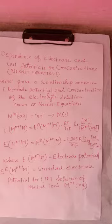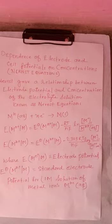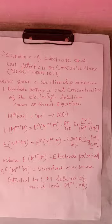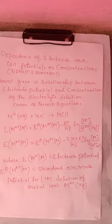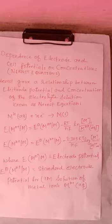Let us see the equation: M^n+ plus ne- will convert into M. Now it can be written E(M^n+|M) equal to E°(M^n+|M) minus RT/nF ln [M]/[M^n+]. M will be in solid state and M^n+ in aqueous state. That will be the electrolyte.